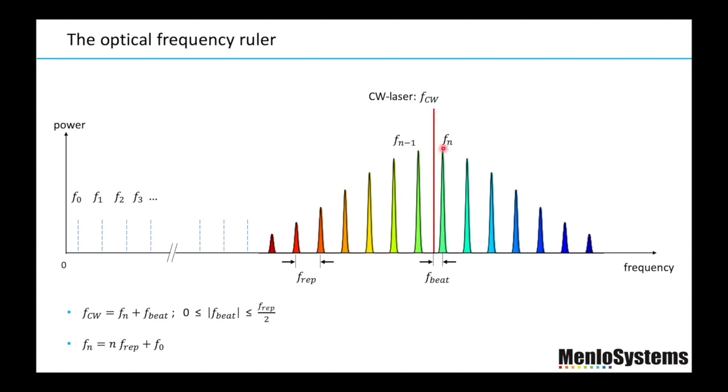This red line could correspond to the frequency of the CW laser that we want to measure precisely, and here we have the mode N that we already know. The spacing between these two is the beat signal. A way to know if this is to the left or to the right of this mode is by increasing slowly the repetition rate.